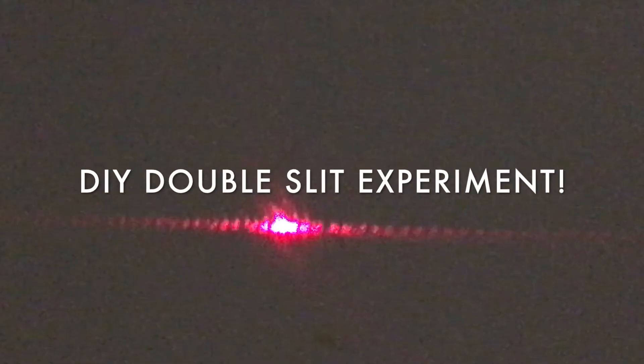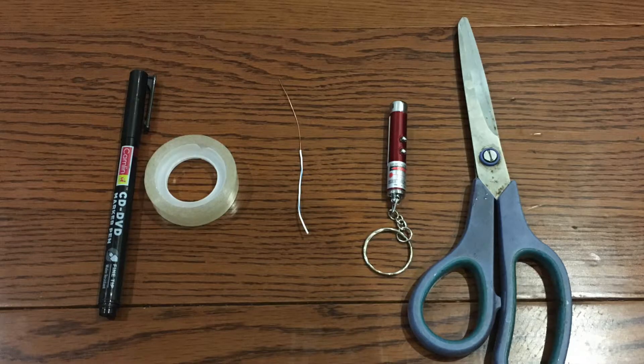In today's video I'm going to show you how to do the double slit experiment at home. For this experiment we will need a permanent marker, tape, some wire, a laser pointer, and scissors.